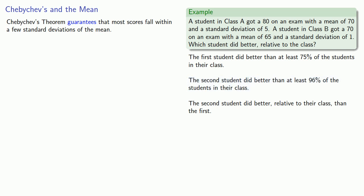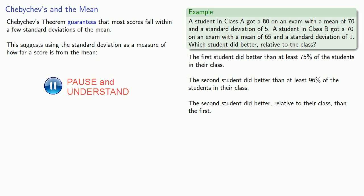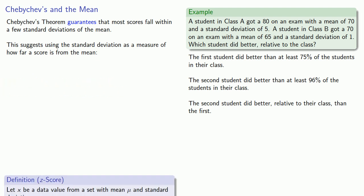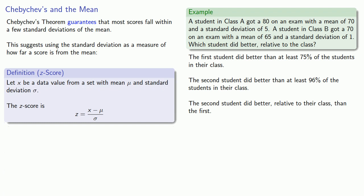And what this suggests is using the standard deviation as a measure of how far a score is from the mean. And this leads to the notion of a z-score. Let x be a data value from a set with a mean of μ and a standard deviation of σ.